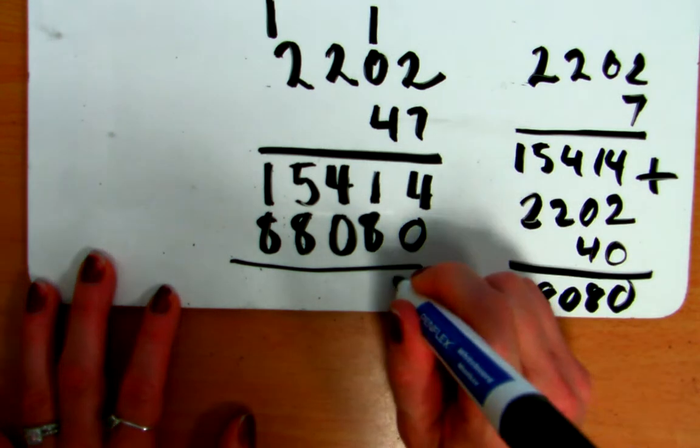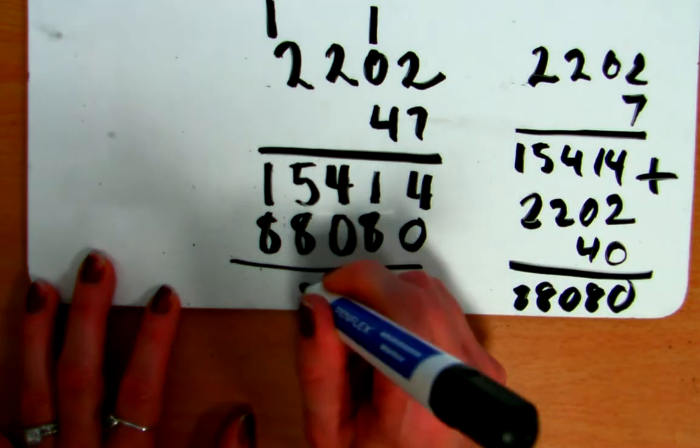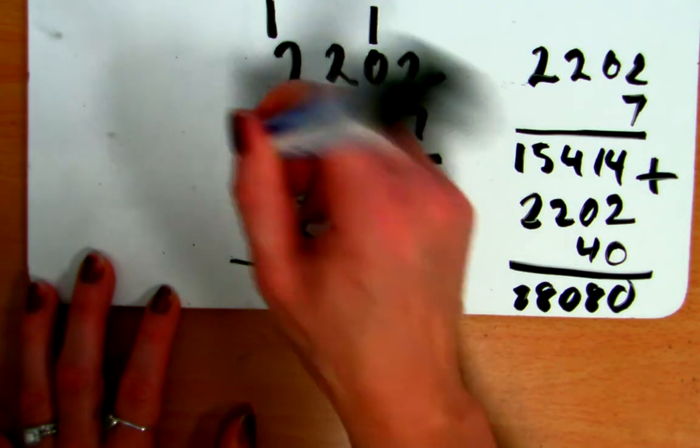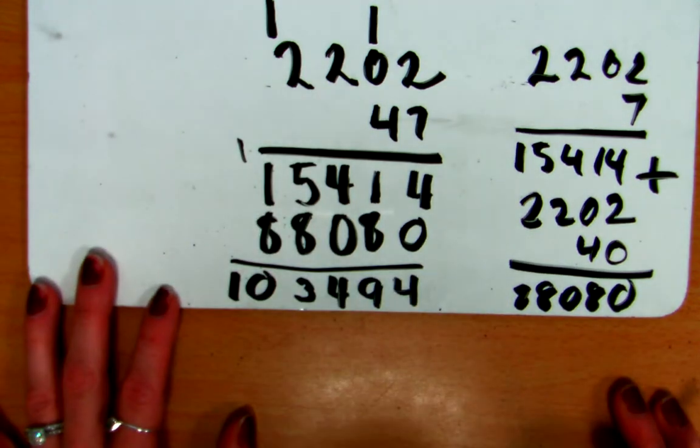So, now I can add together 4, 9, 4, 13, carry a 1, and 10. So, we get 1, 0, 3, 4, 9, 4.